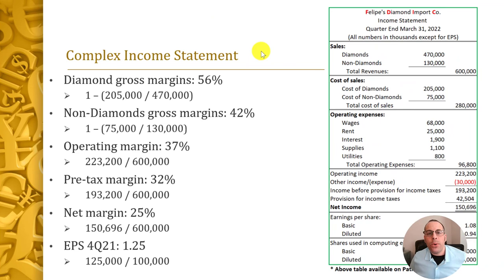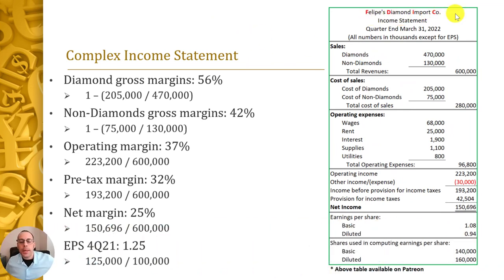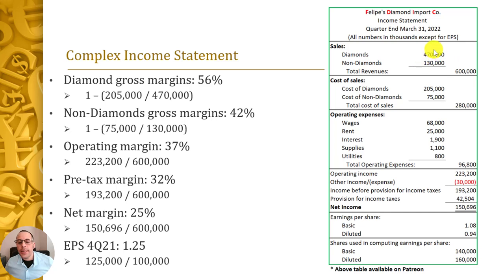Now let's look at a more complex income statement — Felipe's Diamond Import Company, a public company. They break out sales into two categories: diamond sales and non-diamond sales. For the first quarter of 2022, they show $470,000 of diamond sales, but since all numbers are in thousands (except earnings per share), that's actually $470 million. Non-diamond revenue is $130 million, so total revenue is $600 million.